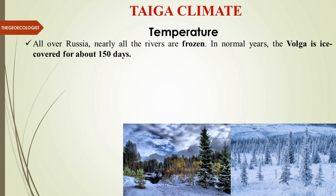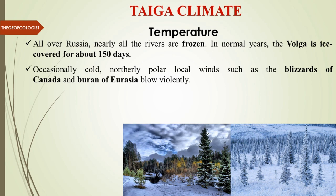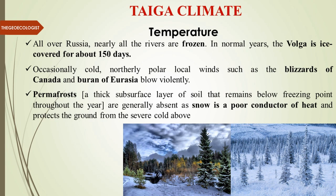Nearly all rivers across Russia are frozen. The famous Volga River is ice-covered for about 150 days a year. Occasionally, northern polar local winds occur — these are called blizzards in Canada and buran in Eurasia. Permafrost, meaning permanently frozen subsoil, is a thick subsurface layer that remains below freezing point throughout the year. Snow, being a poor conductor of heat, protects the ground from severe cold, so permafrost is generally absent in much of the Taiga and mostly present in the tundra region.